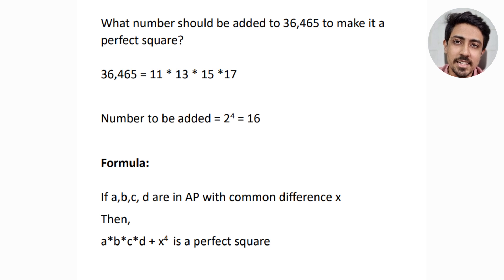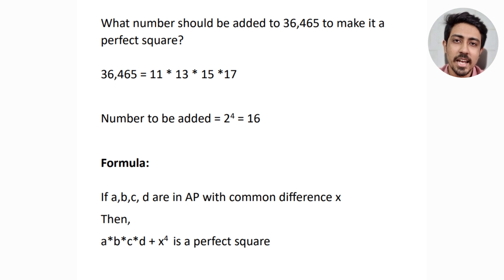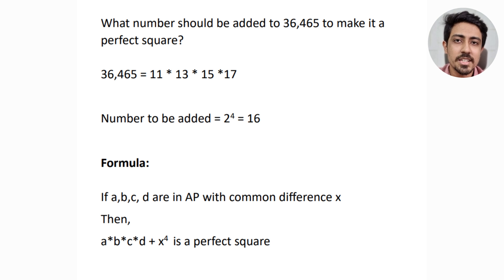The number to add to make it a perfect square is x⁴, where x is the common difference. Since x = 2, you add 2⁴ = 16. In general, if a, b, c, d are in AP with common difference x, then a·b·c·d + x⁴ is a perfect square.